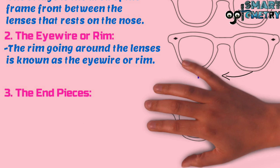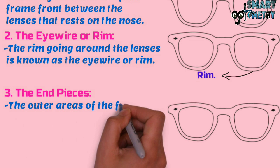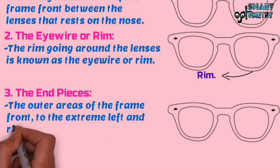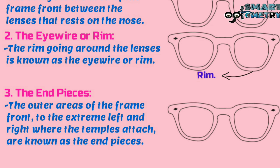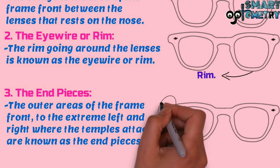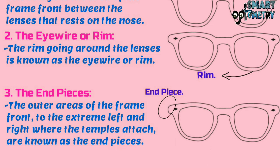Three, end pieces. The outer areas of the frame front to the extreme left and right where the temples attach are known as the end pieces. Here in this figure you can see the end piece.